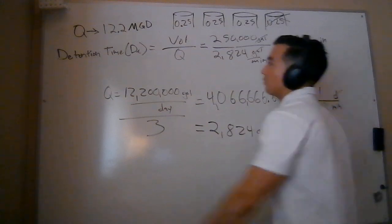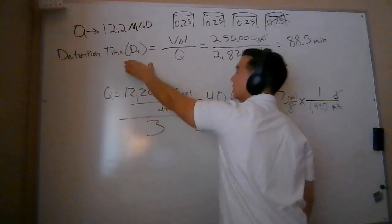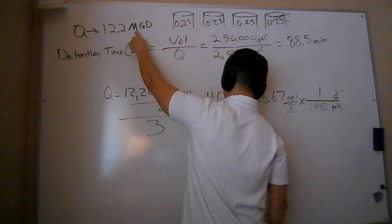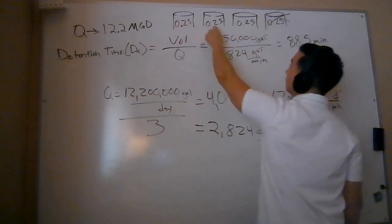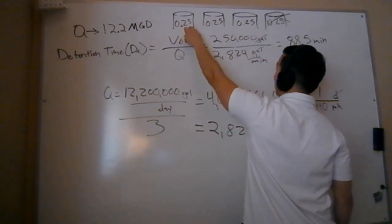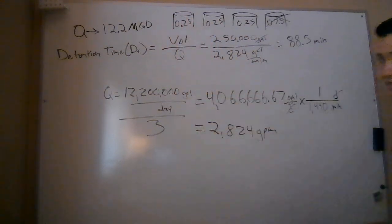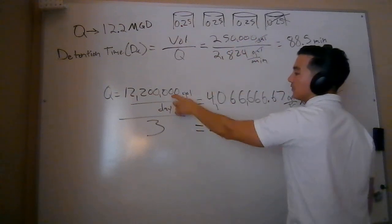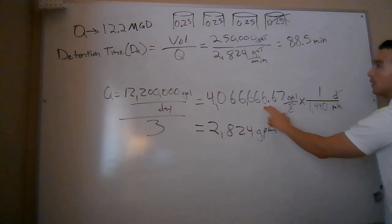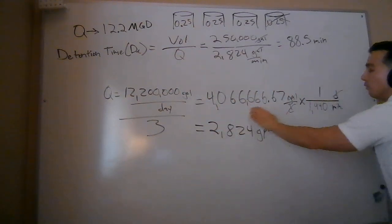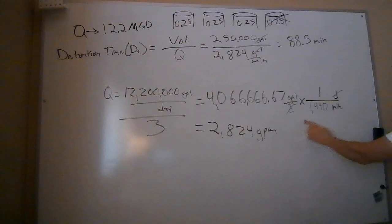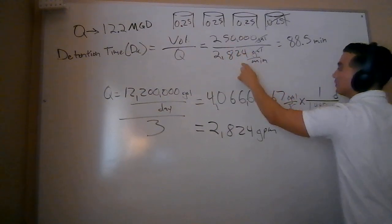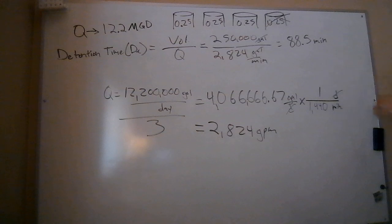So to recap real quick, we wanted to know detention time. We know the formula for detention time is volume divided by flow. I'm given a total plant flow of 12.2 MGD or million gallons per day. That's my average flow. I'm treating that flow in three different clarifiers. They're all 0.25 million gallons, or in other words, 250,000 gallons. We went with the route of one of these clarifiers treats a third of the total flow. This is the amount of water going through just that clarifier. We converted from gallons per day to gallons per minute by dividing by 1,440. Then we plug this back into our formula. So now we just did volume divided by flow and we were left with minutes, just over an hour.